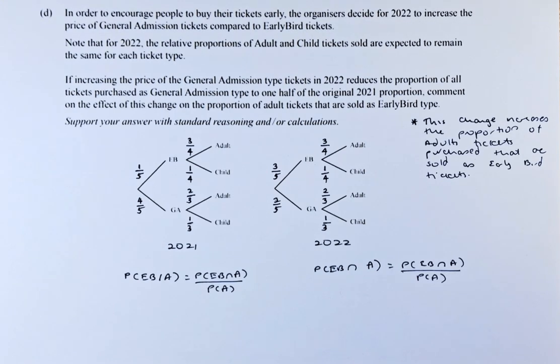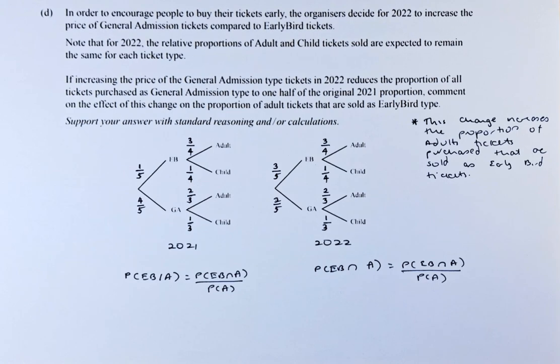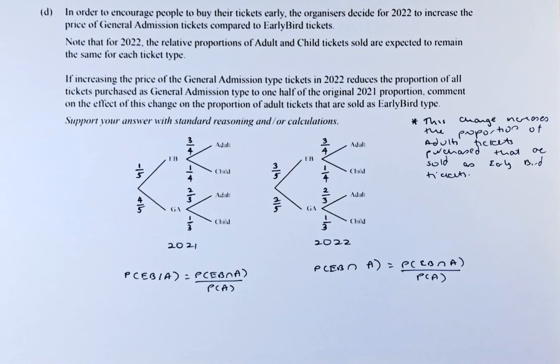If increasing the price of general admission tickets reduces the proportion of all tickets purchased at general admission type to one-half of the original 2021 proportion, comment on the effect of this change on the proportion of adult tickets that are sold as early bird type. Support your answer with standard reasoning and calculation.